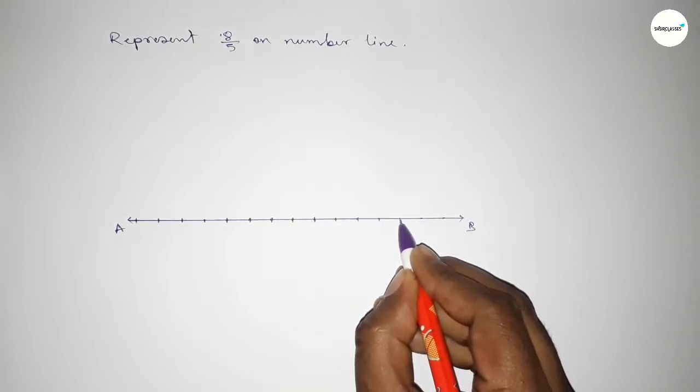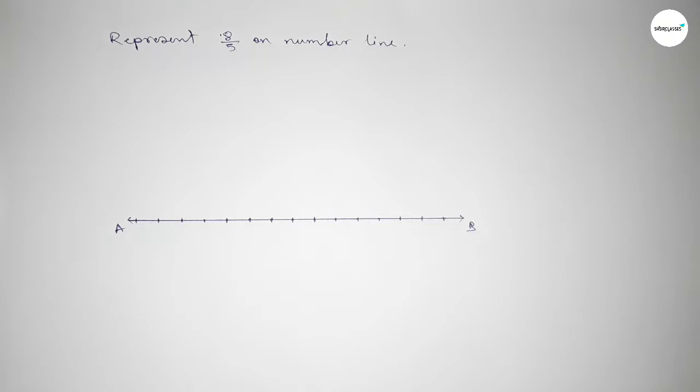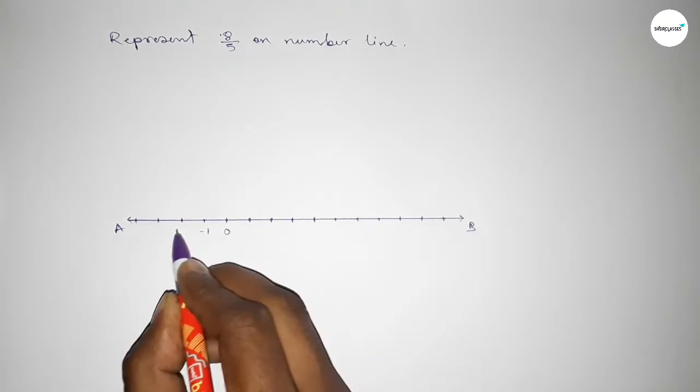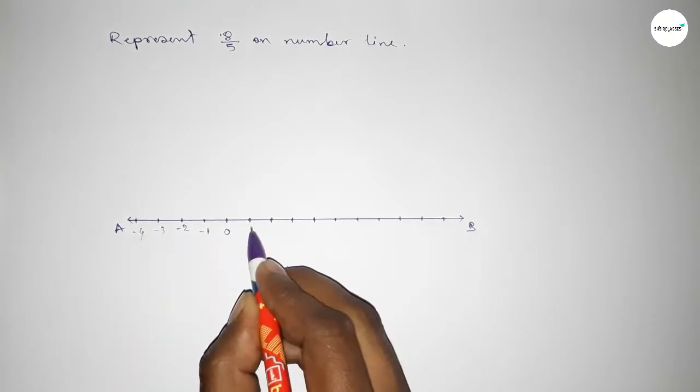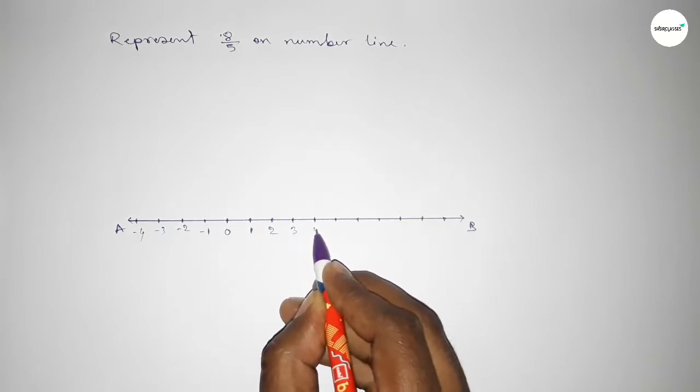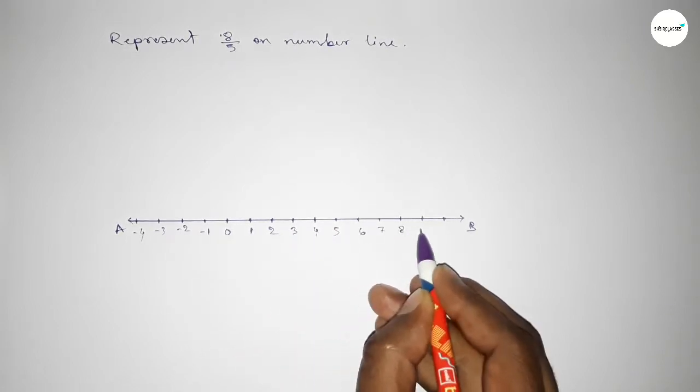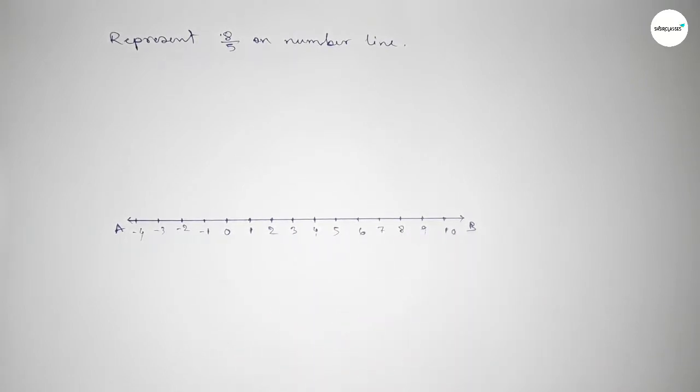Taking the starting number as zero, we have -1, -2, -3, -4 on this side, and 1, 2, 3, 4, 5, 6, 7, 8, 9, 10 on this side.